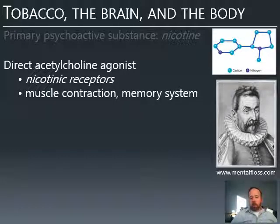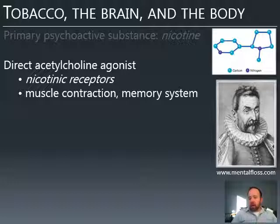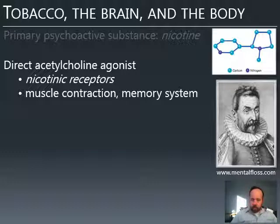What does acetylcholine do? First, it is the neurotransmitter that moves signals from your nerves into your muscles — in order to move, your nerves transmit a signal to your muscles to contract, and acetylcholine is the transmitter used in that system. Acetylcholine is also used in the brain, particularly for memory. There are a lot of acetylcholine neurons in areas like the hippocampus that are most involved in memory.